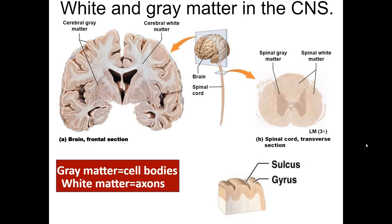The brain isn't a flat surface — it has gyri (ridges) and sulci (dips/valleys), giving it a wrinkly appearance. Together, these features increase the overall surface area of our brain, allowing for more regions and greater functional capacity.